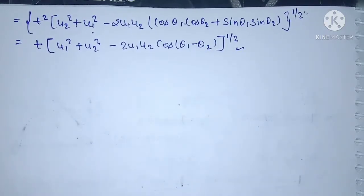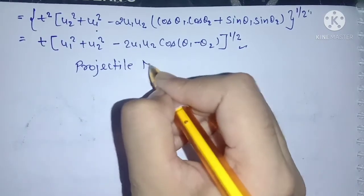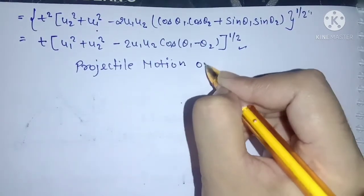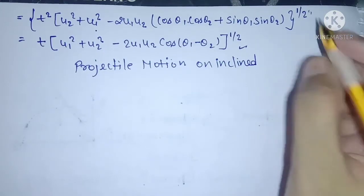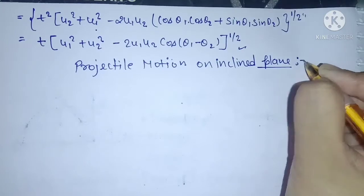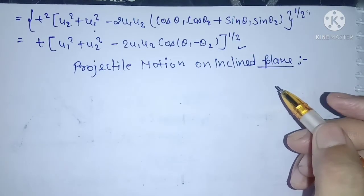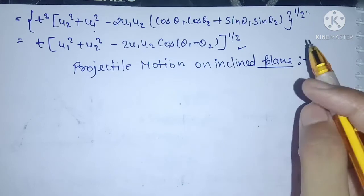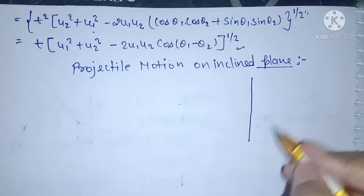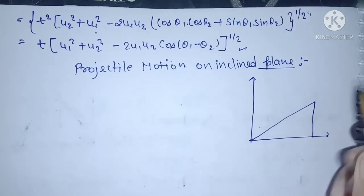The next concept is projectile motion on an inclined plane. Until now we only discussed normal ground-plane projectile. Now we will see how motion — time of flight, angle, and maximum height — varies on an inclined plane. Let's draw a diagram of any inclined plane.